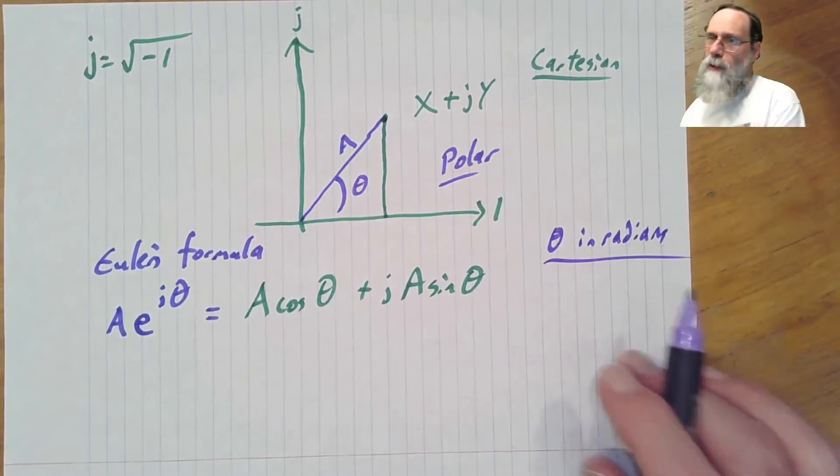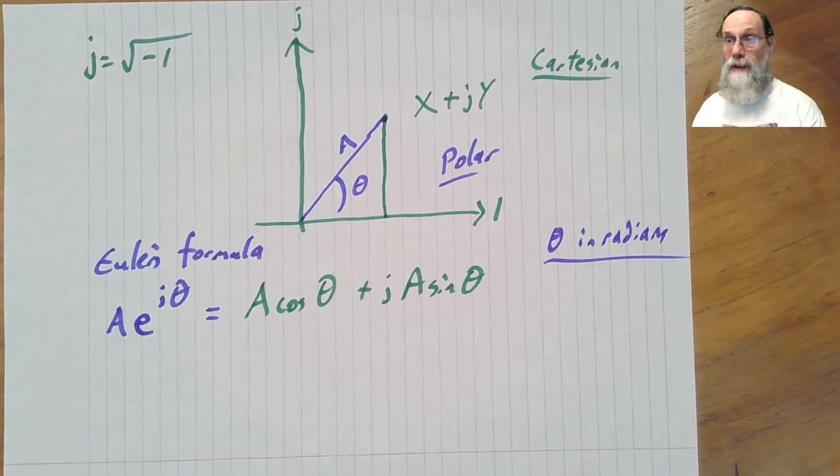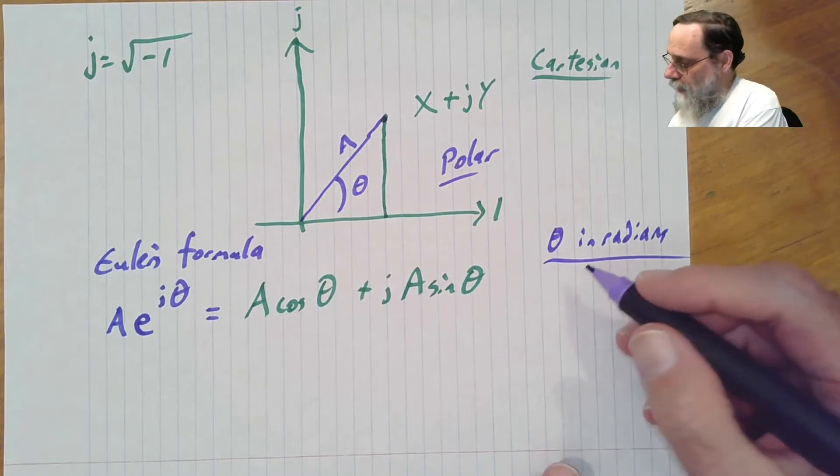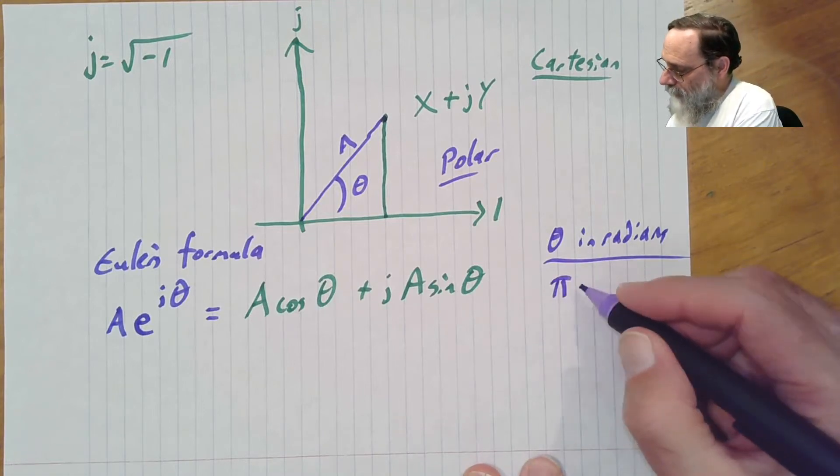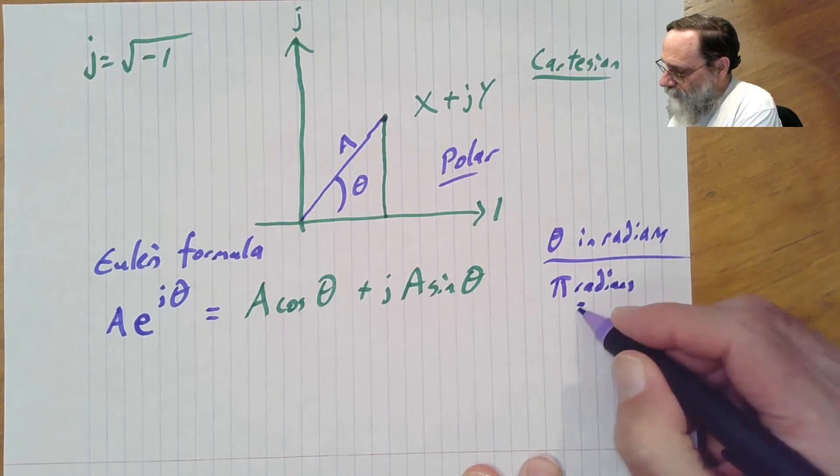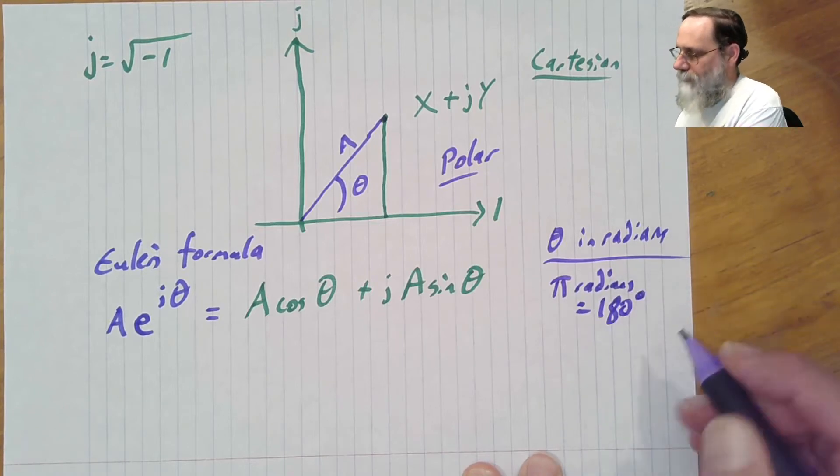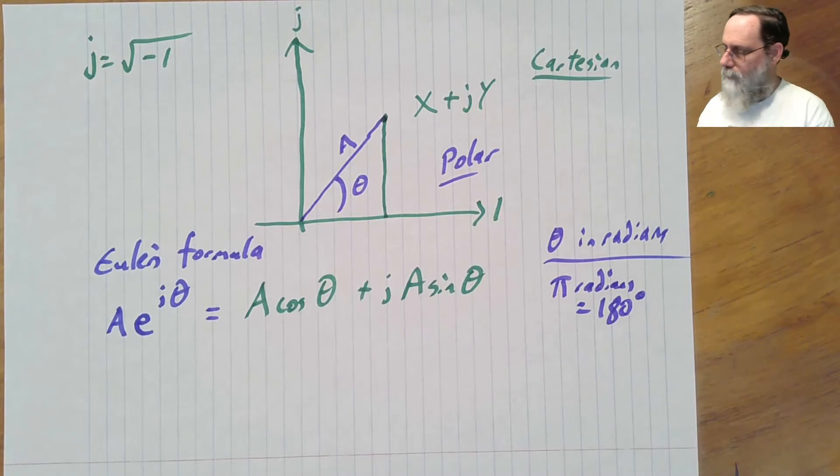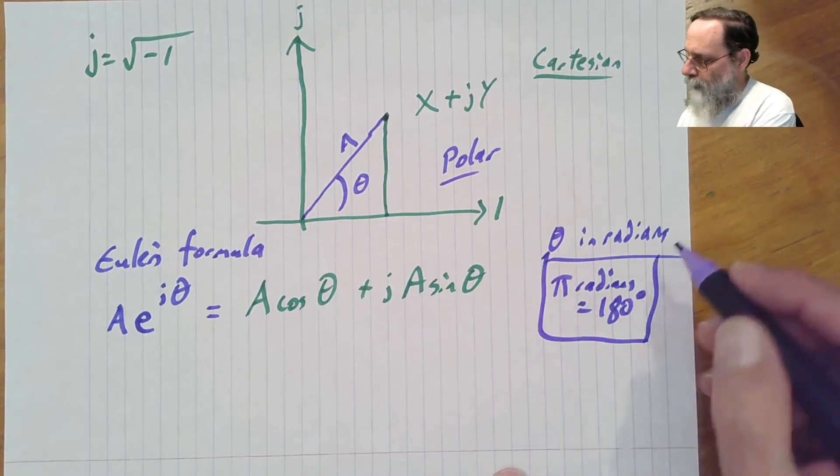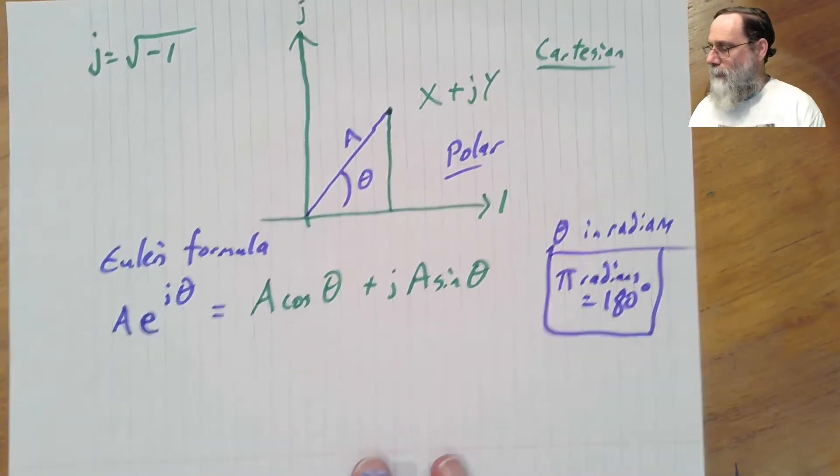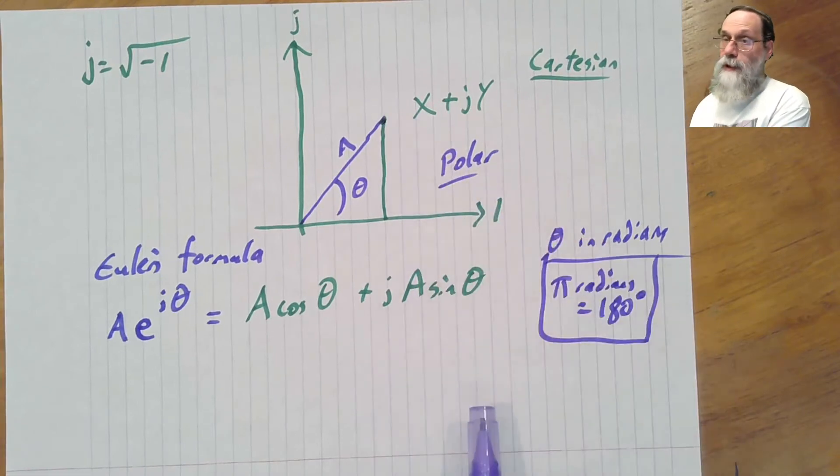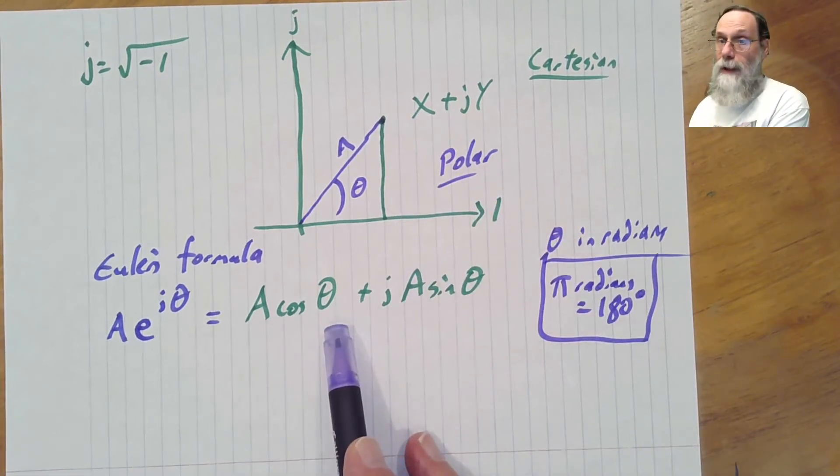If we wanted to do angles in degrees, we would have to scale them, where pi radians is equal to 180 degrees. If you look at this point, x plus j y, well, x is A times cosine theta.